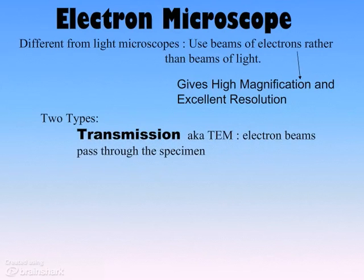There are two types of electron microscopes that we should be familiar with. The two main types are the transmission electron microscope — called the TEM, which stands for Transmission Electron Microscope — where the electron beam actually passes through the specimen.